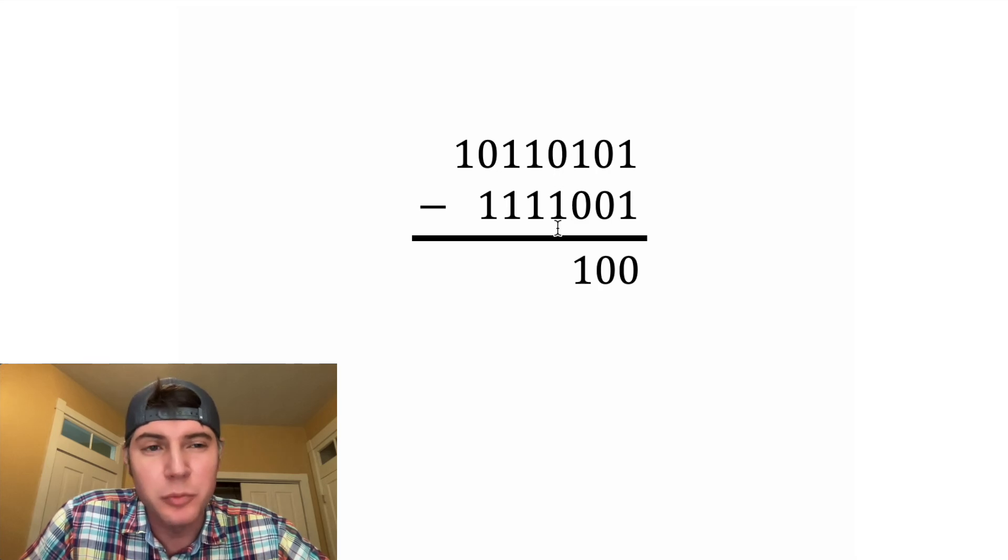And then 0 minus 1 we can't do, so we're going to have to borrow. So we're going to scratch out this 1 and make it a 0, and we're going to be basically borrowing 2 for this column. For binary, a 1 in this column is equal to 2 in this column.